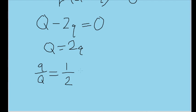This means that the electrostatic force is maximized when small q over big Q is equal to 1 half or 0.5.